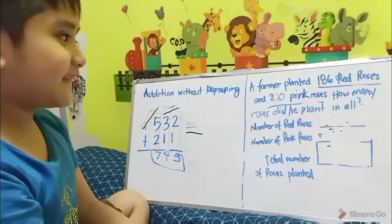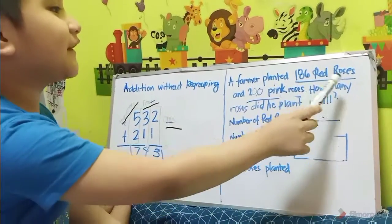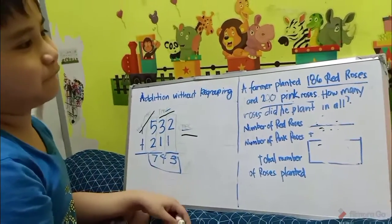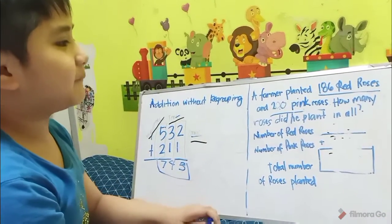Here's another example. A farmer planted 186 red roses and 200 pink roses.